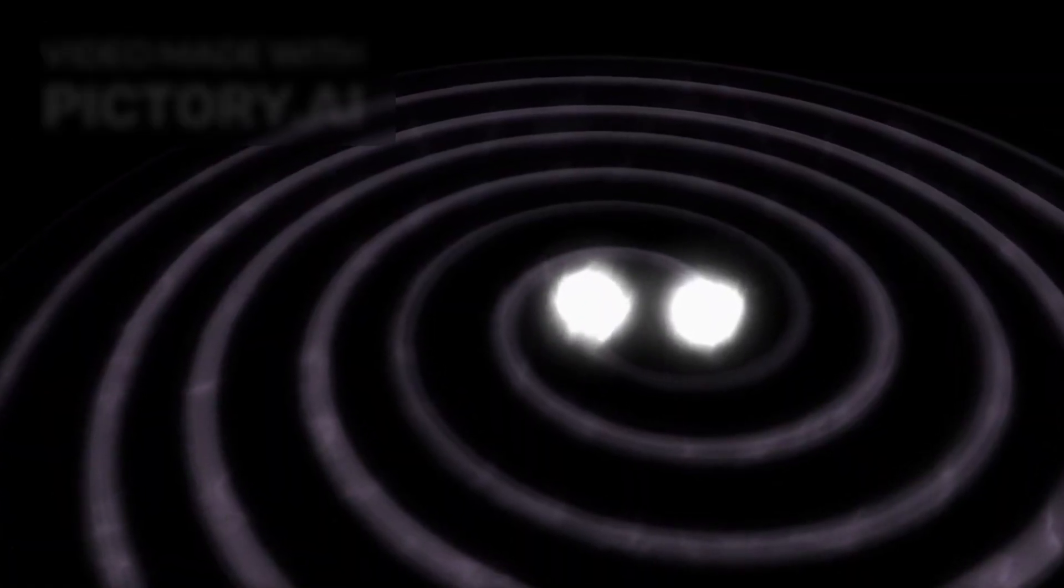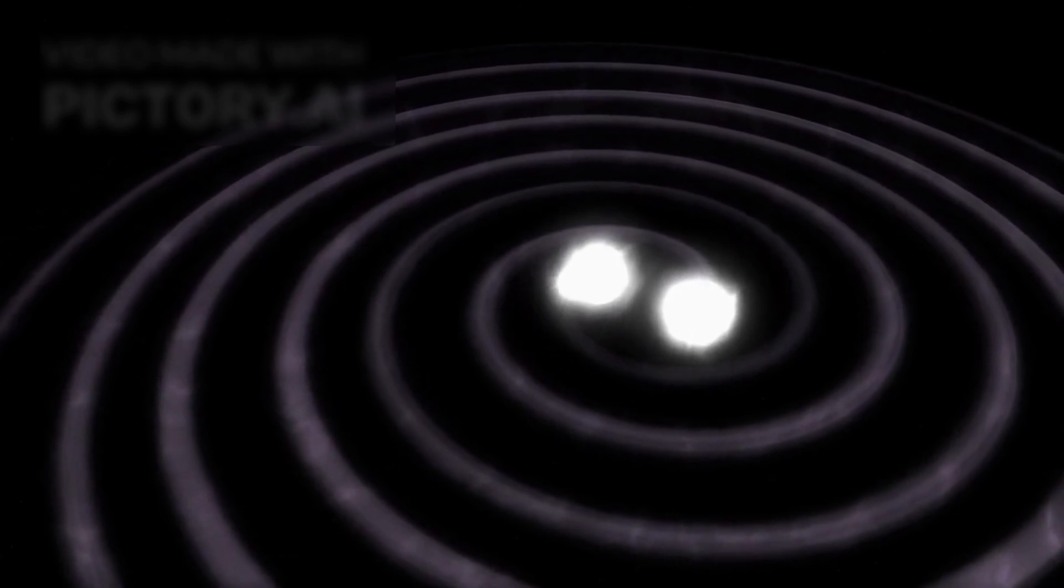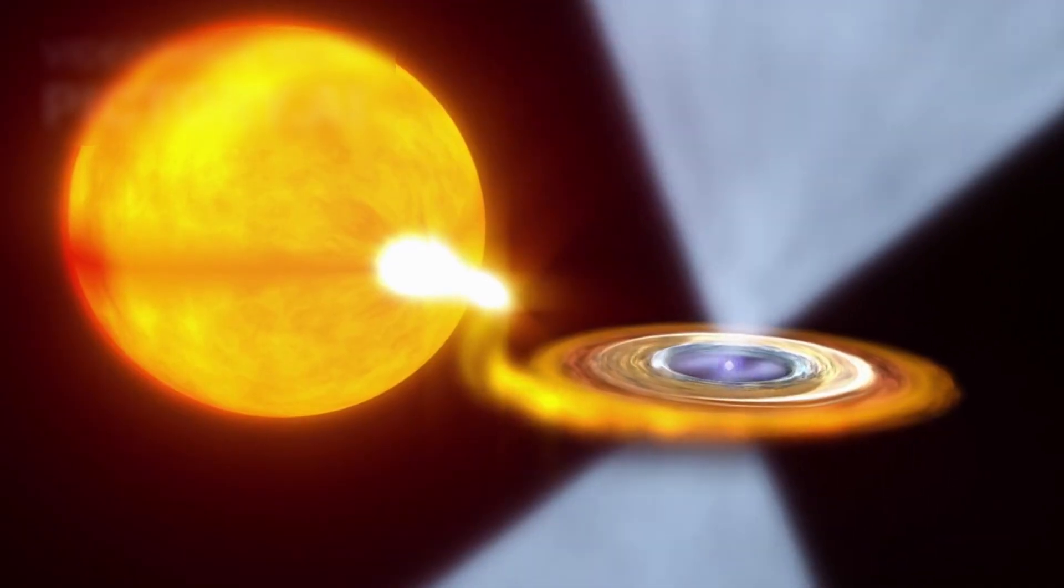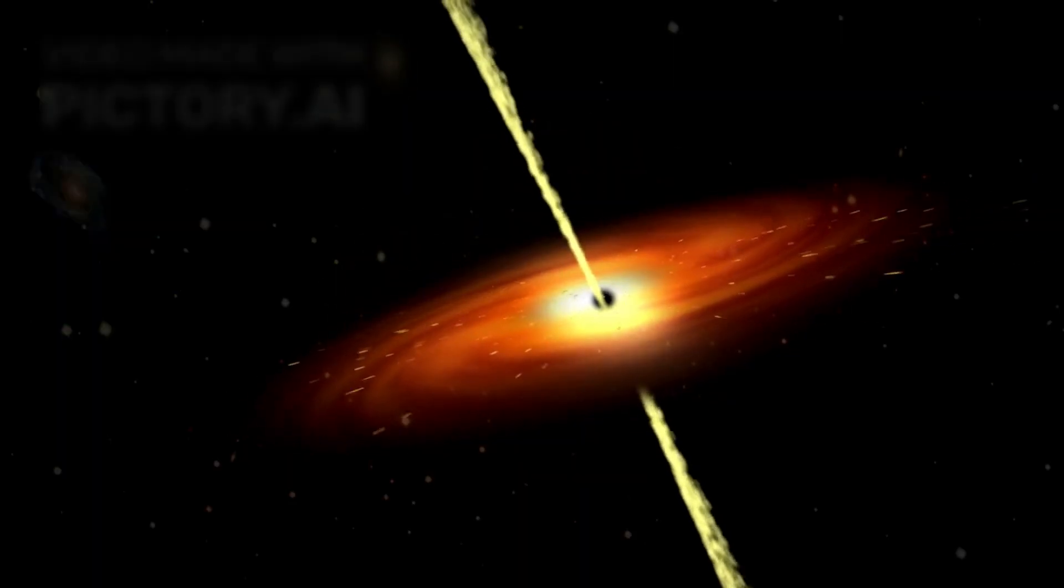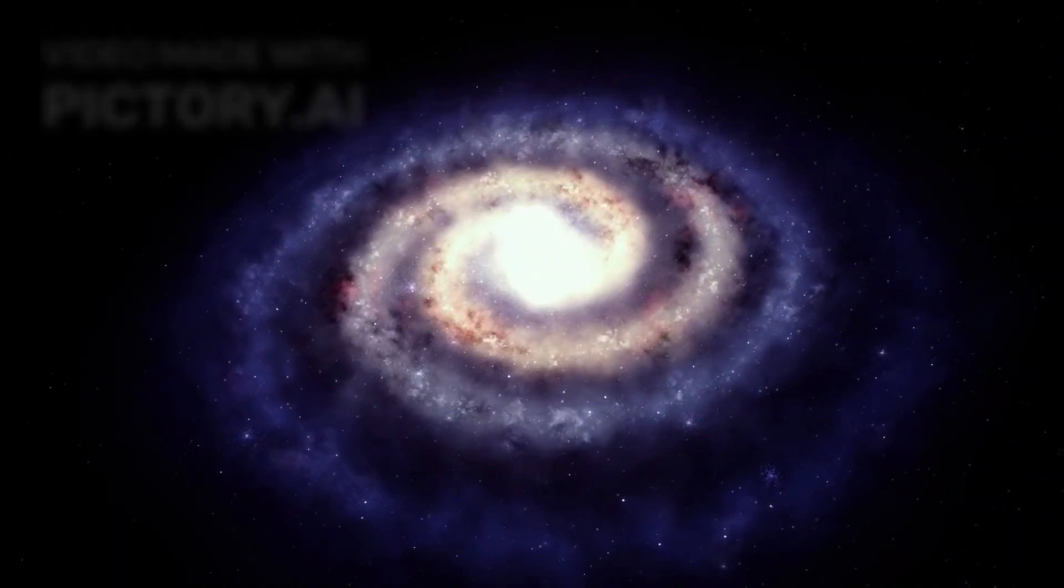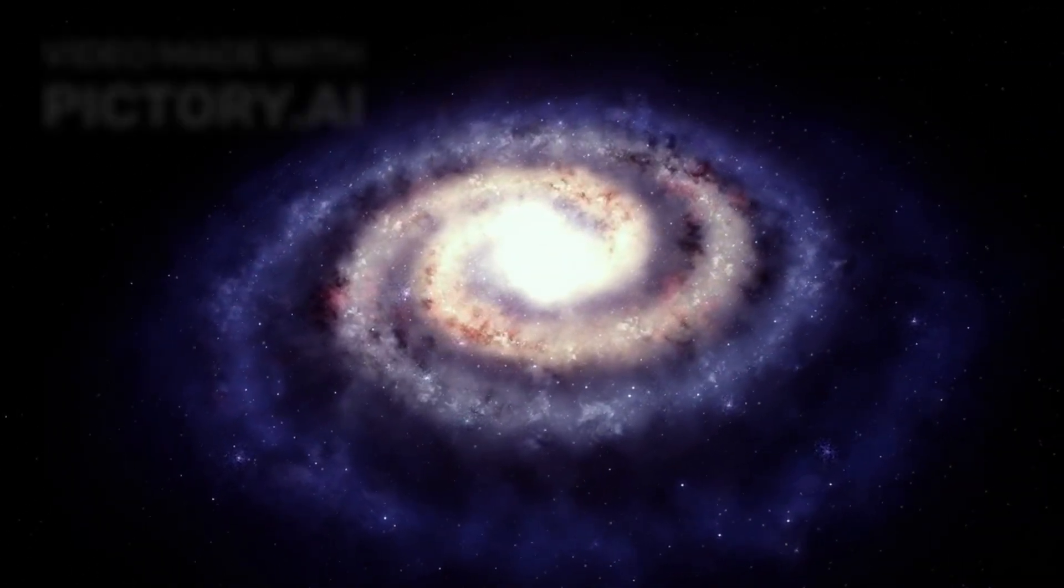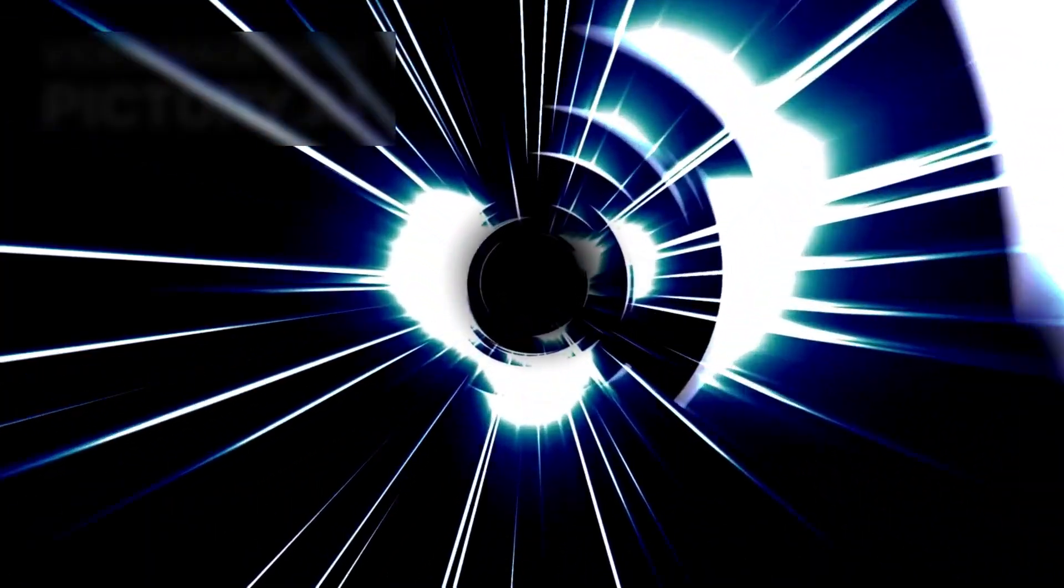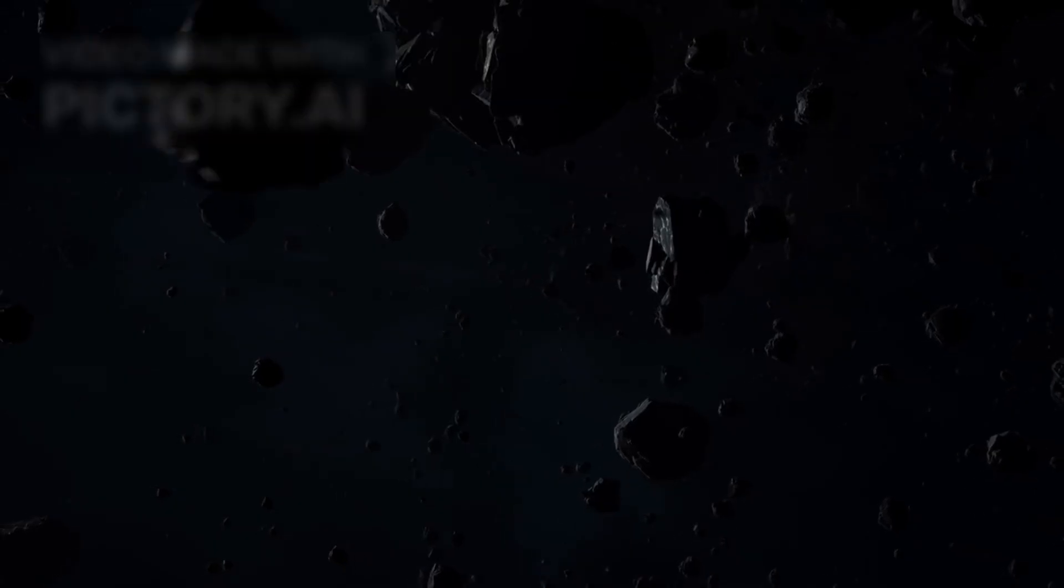Some of the warp signatures discovered in gravitational wave data don't match any known event. No neutron star collisions. No black hole mergers. Just anomalies. Distortions with patterns. Some physicists now wonder, are we seeing the scars of ancient engines? The gravitational wake of civilizations that no longer exist? Or perhaps, that still do? If warp travel exists out there, and we've glimpsed its residue, then the challenge isn't to invent it. It's to follow it. To trace the trails already etched into the dark by those who came before.